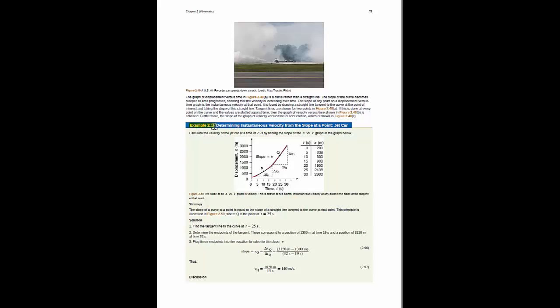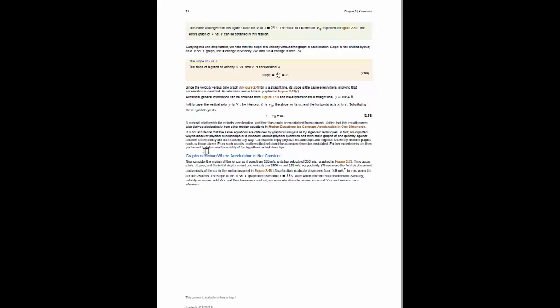Example 2.18 discusses how to measure instantaneous velocity from the slope at a point. On page 74, we see that the slope of a velocity versus time graph is in fact the acceleration.